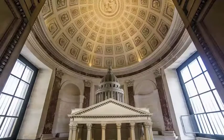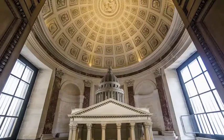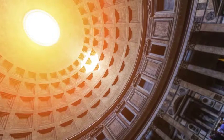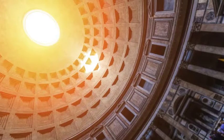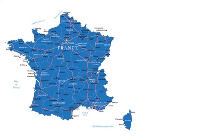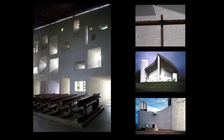Throughout the day, the light from the oculus moves around the space in a sort of reverse sundial effect. The oculus also serves as a cooling and ventilation method. During storms, a drainage system below the floor handles the rain that falls through the oculus.